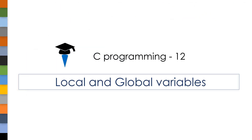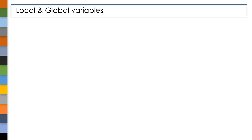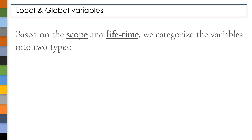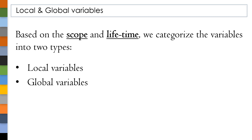In this video, we will discuss what local and global variables are, along with their scope and lifetime. Based on the scope and lifetime of a variable, we categorize variables into two types: local and global variables.